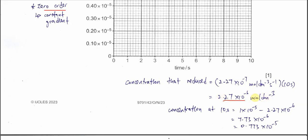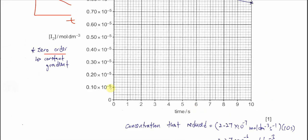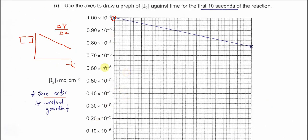This is the concentration reduced after 10 seconds. So calculate the remaining concentration at 10 seconds: initial concentration minus the reduction. Converting to the same power, 0.773 × 10⁻⁵ mol dm⁻³ remains at 10 seconds. Plot this point — it sits somewhere here — then draw a straight line to complete the graph.